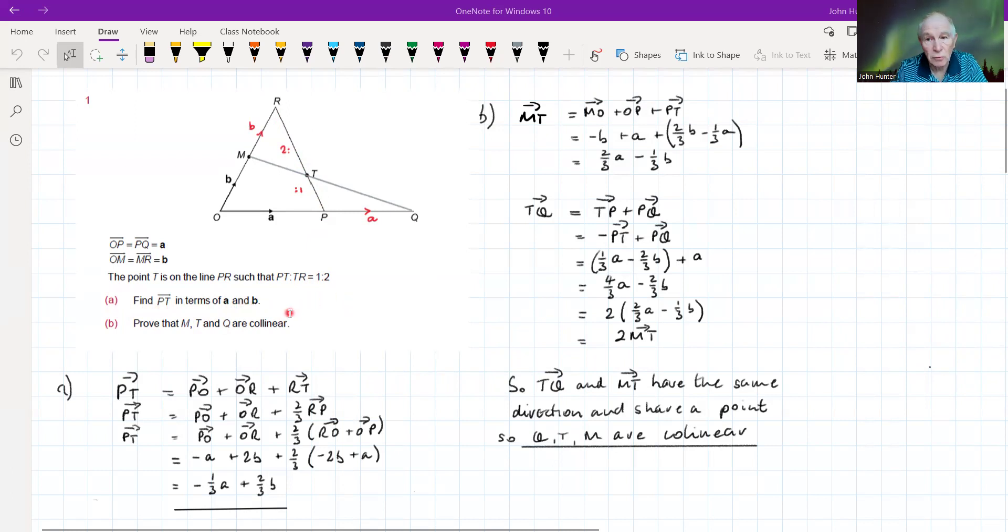Right, okay. Sort of just a quick recap. A and B are obviously vector quantities. So this is some unknown vector, vector A. We don't know what numbers there. It might be 2 along and 5 up or whatever. And the same with B. We don't know what the numbers are. But it doesn't matter because we are being asked to find PT in terms of A and B.